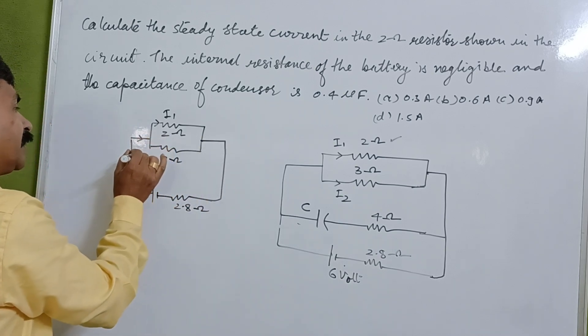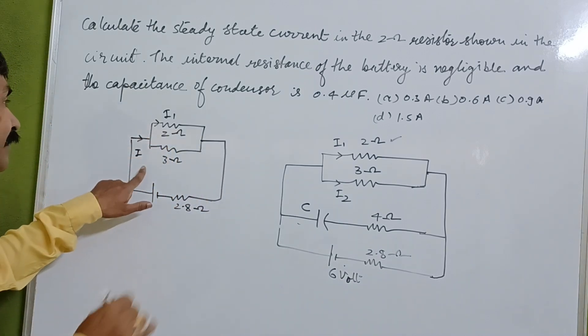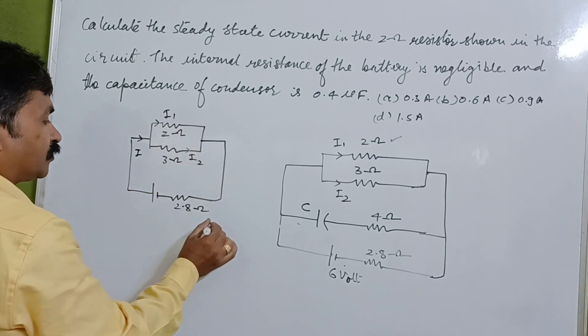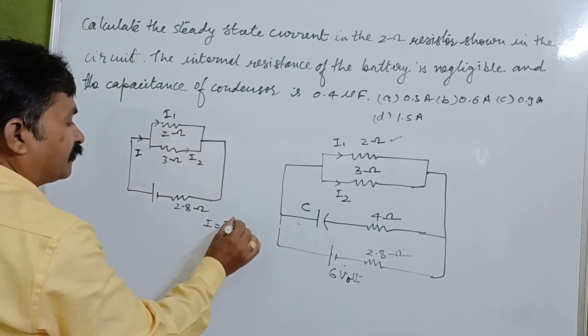Here the current i1 and here i2. So total current i1 plus i2.